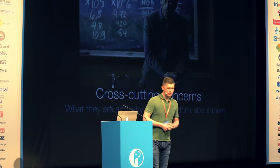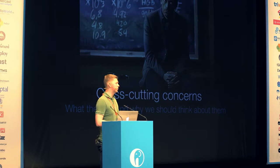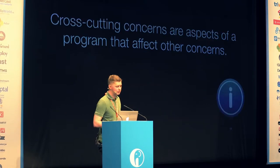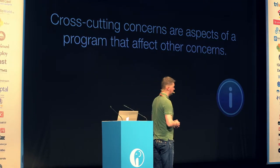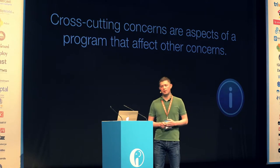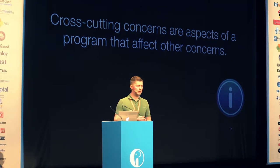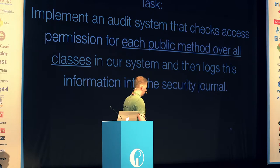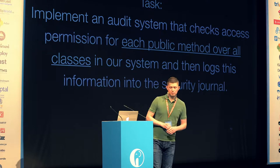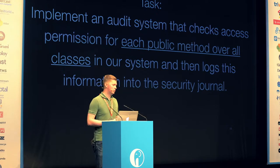Now it's time to talk about cross-cutting concerns. What are they? How do they influence our code, and how can we solve them? According to Wikipedia, cross-cutting concerns are aspects that affect other concerns in our application. A typical example is logging. We want to log something, and we have our clean model. The task is simple: just add logging to each of your public API. How can you solve this task?